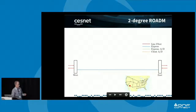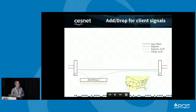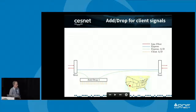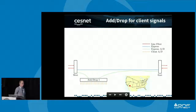ROADM stands for reconfigurable optical add-drop multiplexer. It allows you to slice and dice the spectrum and route individual chunks between different I/O ports. This is an example of a very simple ROADM with just two degrees — a degree meaning essentially direction along a whole link — one to the west and one to the east, so it's not terribly useful. Adding an add-drop box gives us the capability of inserting and extracting signals locally, providing three options per wavelength.